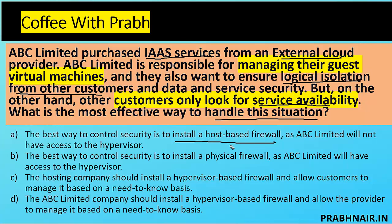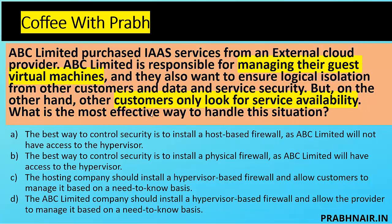Option B: install a physical firewall — wrong, because ABC Limited does not have authority to install physical hardware in the provider's premises, and the statement that they have hypervisor access is itself incorrect. Option C: the hosting company should install a hypervisor-based firewall and allow customers to manage it — providers never give access to the hypervisor since one hypervisor hosts multiple tenants. Option D: ABC Limited installs a hypervisor-based firewall and lets the provider manage it — never happens. The answer is A: install a host-based virtual firewall within their IaaS environment to segment the network.